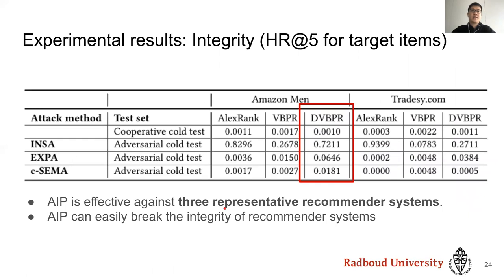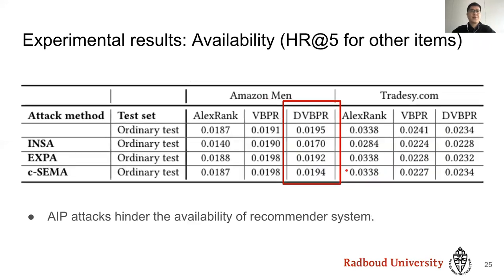First, let's look at integrity using HR@5. For VBPR on Amazon, if the attack is successful, the original HR@5 will be much lower than HR@5 for the attacked item — this is indeed the case, with the insider attack having the largest impact. We also find that even CSEMA has a surprisingly large impact. Looking at availability — how the attack affects other non-adversarial items — for the insider attack, non-adversarial items are also impacted as their HR@5 goes down, but it maintains the same level for EXPA and CSEMA. This is a very interesting observation.